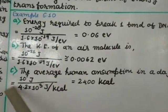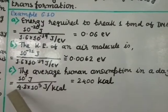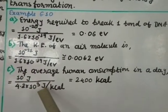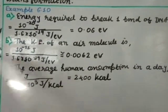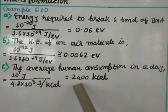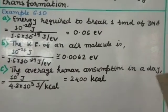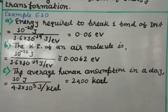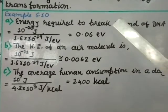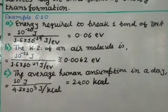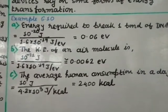Part (c): Average human daily energy consumption = 10⁷ J ÷ (4.2 × 10³ J/kcal) = 2400 kilocalories. That is the solution for Example 6.10 parts a, b, and c.